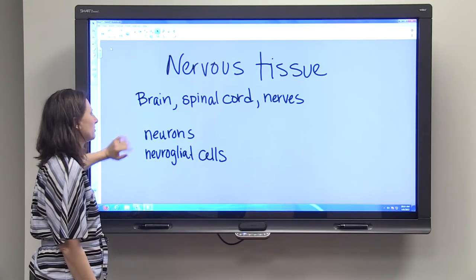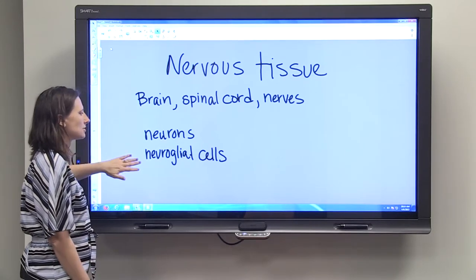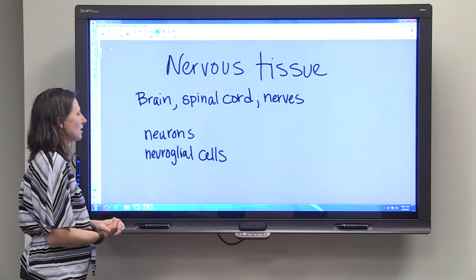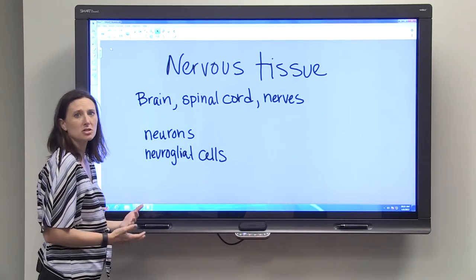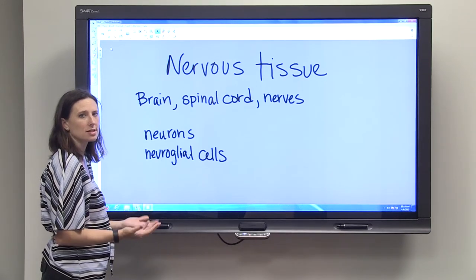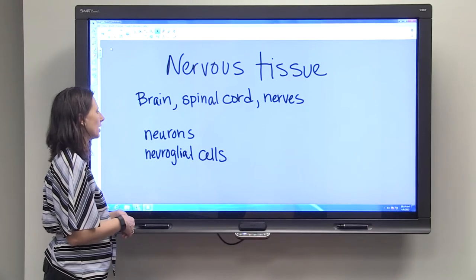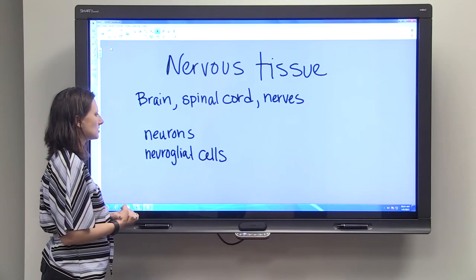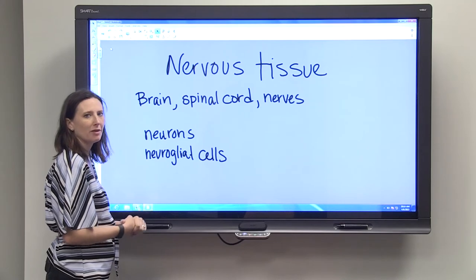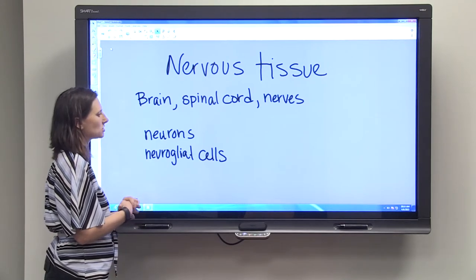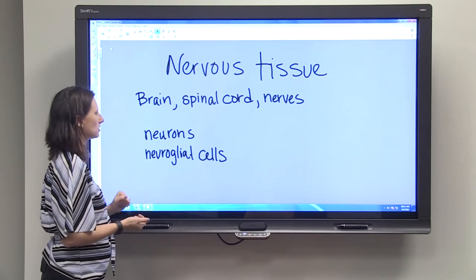Nervous tissue is made up of two types of cells: neurons and neuroglial cells. The neurons are the cells that actually conduct those impulses and send those impulses throughout your body. Neuroglial cells are the majority of what nervous tissue is made up of - about 90% of nervous tissue - and they support the neurons.